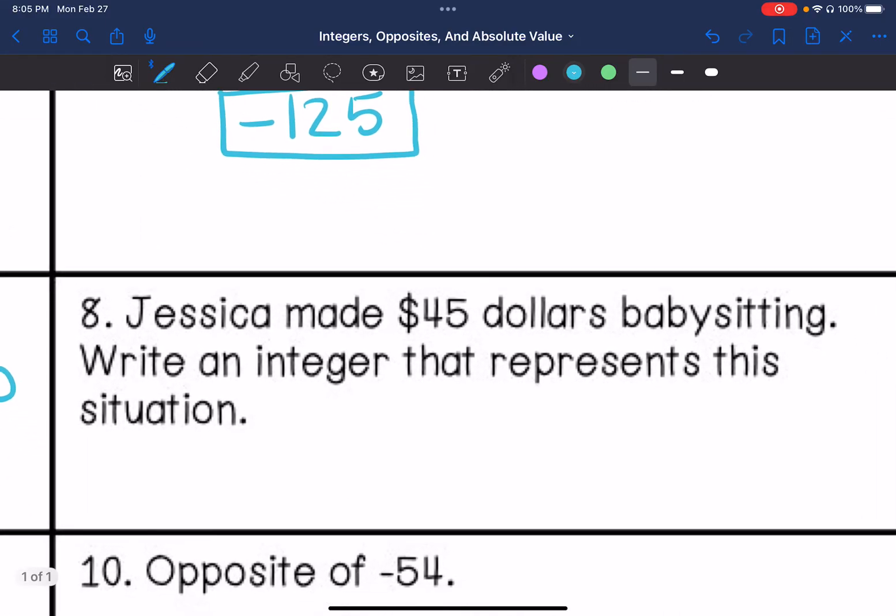Jessica made $45 babysitting. Write an integer that represents this situation. So if she made $45, that means she's gaining $45, so it's going to be positive.